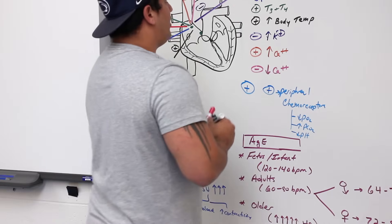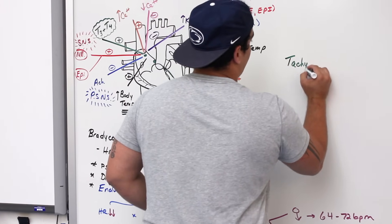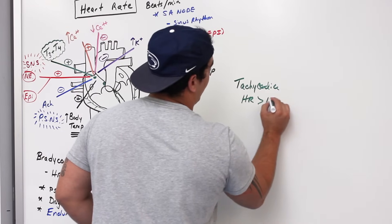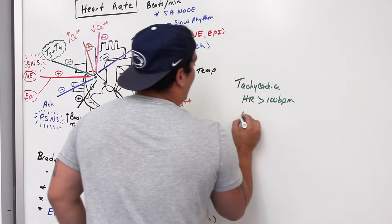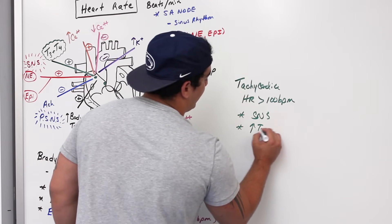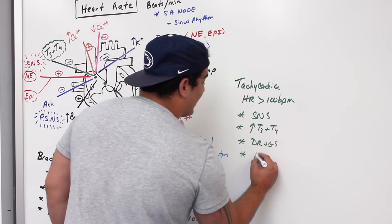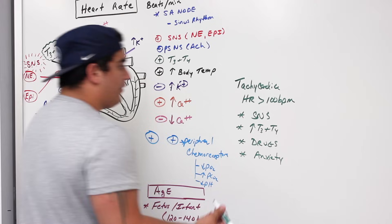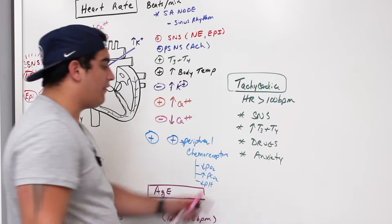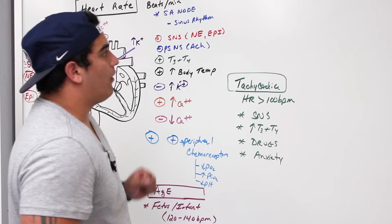Tachycardia is defined as a heart rate greater than 100 beats per minute. Causes include sympathetic nervous system activity, high T3 and T4 levels, certain drugs, and psychological factors like anxiety. People experiencing anxiety or certain psychological disorders can have a very fast heart rate.